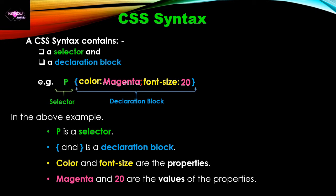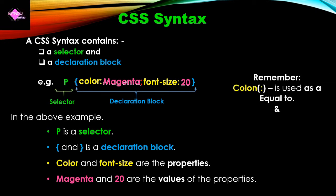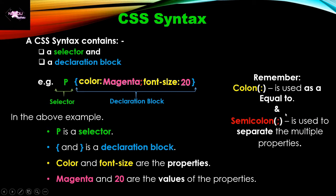Remember that the colon is used as an equal-to symbol, whereas the semicolon is used as a separator between multiple properties. When you want to add another property, you give a semicolon and then write the next property within the curly brackets. This is the syntax for CSS.